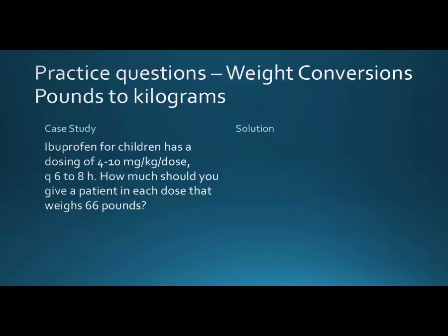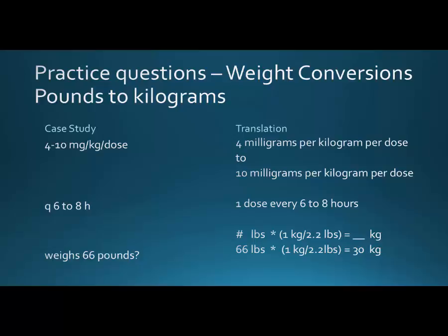The Q 6 to 8 H is a measure of how often we give a dose, and we have somebody at 66 pounds but dosing in kilograms, so we have to resolve that. So: 4 to 10 mg per kg per dose means 4 milligrams per 1 kilogram per dose. It's actually a range: 4 milligrams per kilogram per dose to 10 milligrams per kilogram per dose. For the patient at 66 pounds: one kilogram is 2.2 pounds, so 66 pounds times 1 kilogram per 2.2 pounds equals 30 kilograms.